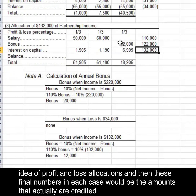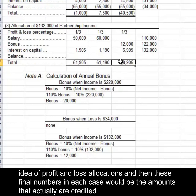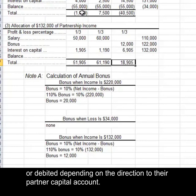That demonstrates the idea of profit and loss allocations. These final numbers in each case are the amounts that are credited or debited, depending on the direction, to each partner's capital account.